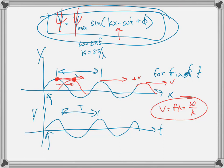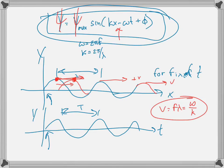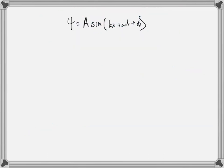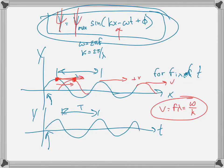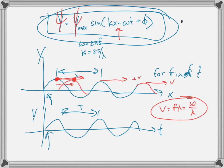So what is the equation for a wave that moves in the minus x direction? A wave moving in the minus x direction would be psi equals A times sine of (kx plus ωt plus φ). It doesn't matter if it's plus φ or minus φ because φ is just an arbitrary constant. This is a wave that moves in the minus x direction, whereas the previous one moves in the plus x direction.